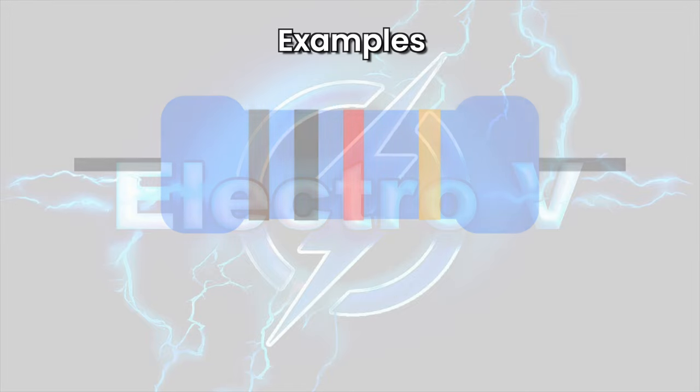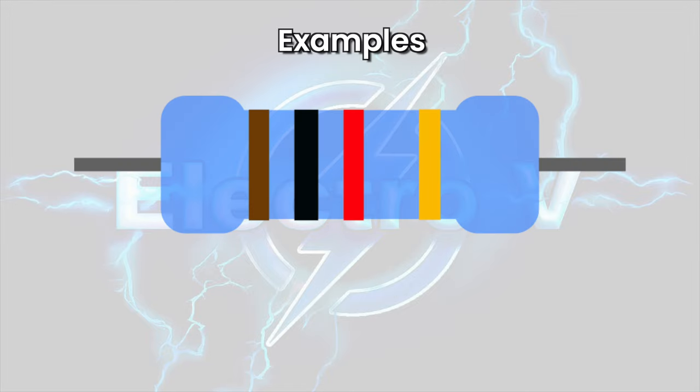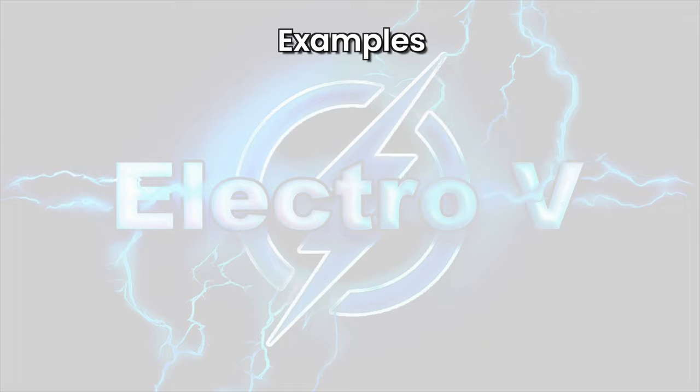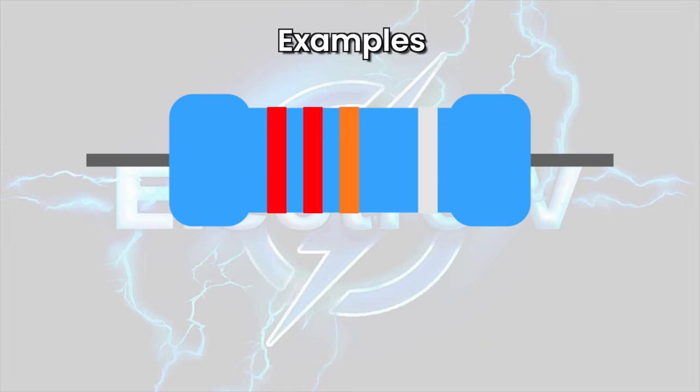Examples: a resistor with bands colored brown, black, red, and gold has a resistance value of 1.0 k omega with a 5% tolerance. A resistor with bands colored red, red, orange, and silver has a resistance value of 22 k omega with a 10% tolerance.